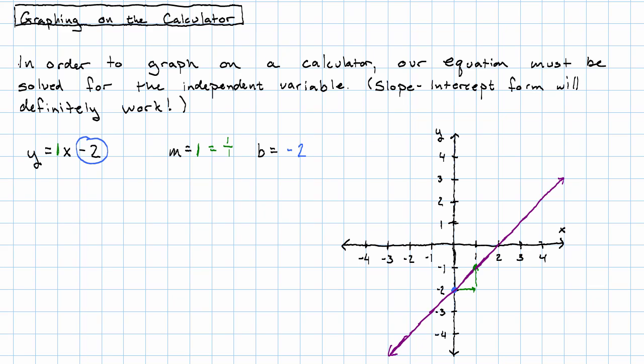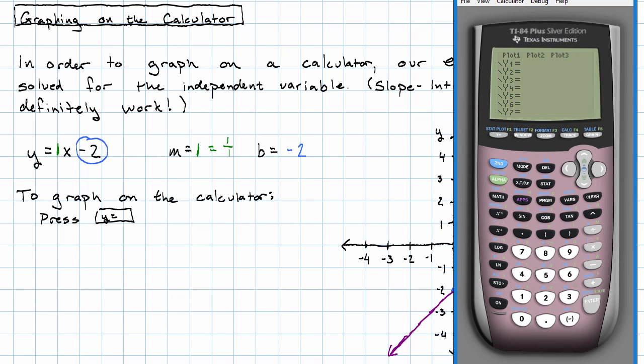How do we graph that on the calculator? First, we'll press our y equals button, and then we'll enter our equation. We don't need to put that 1 in, we just wrote that in so we could see the slope. x minus 2. Now to get the graph, we'll just press the graph button.